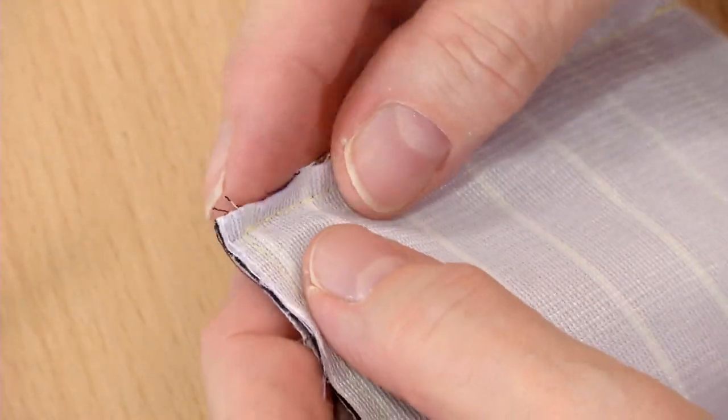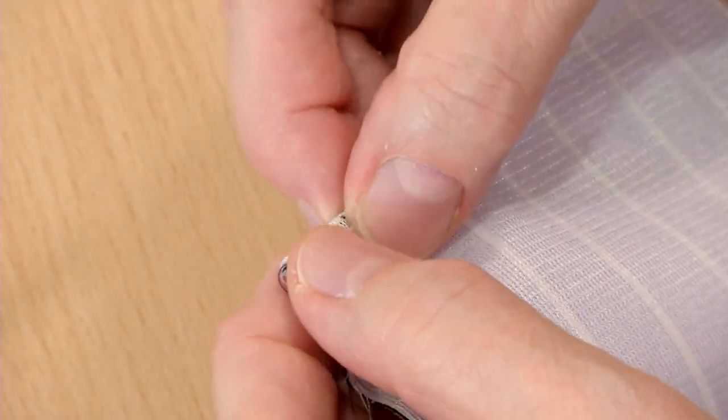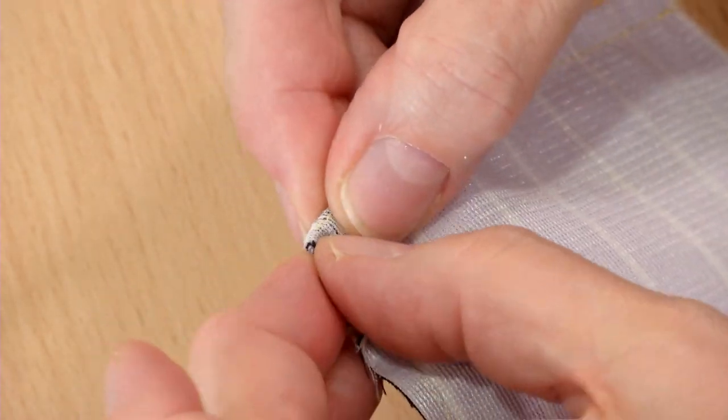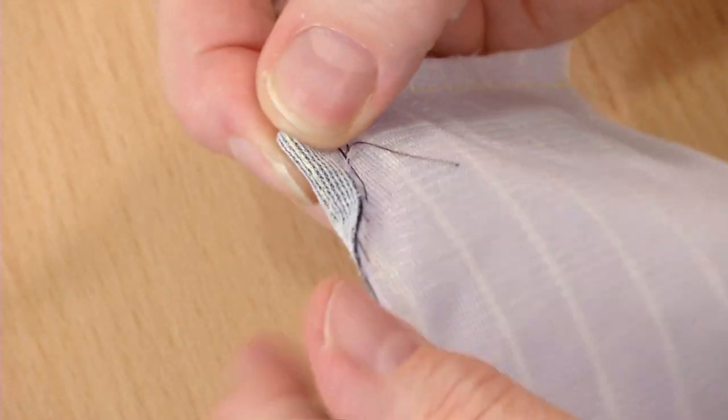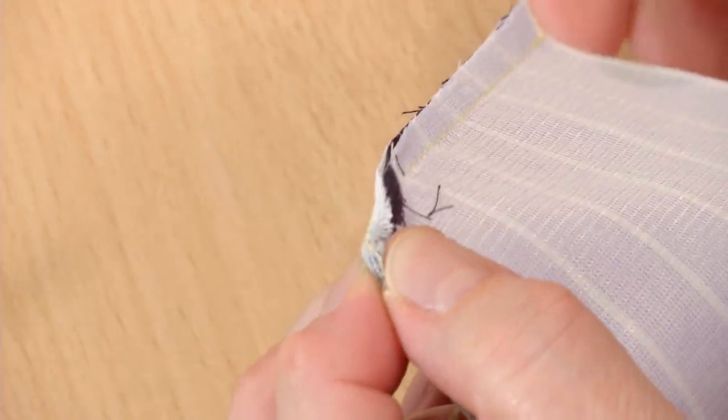Then fold one seam allowance under exactly on the seam line. Fold the adjacent allowance over the first one and hold them in place with your thumb. Press if desired.